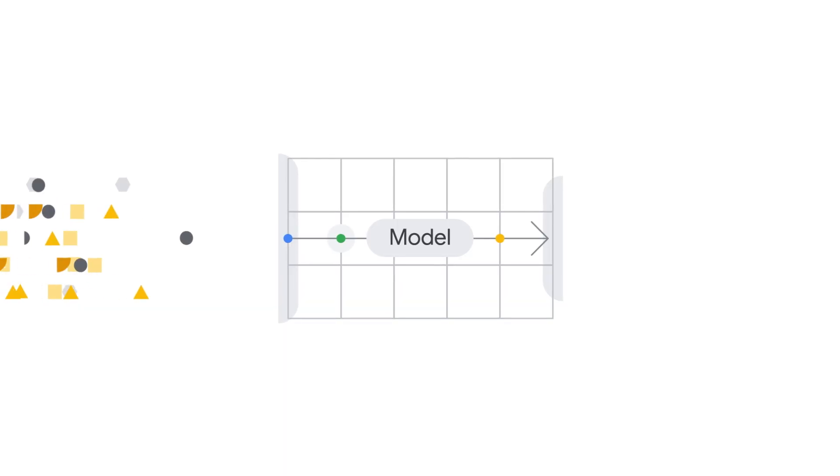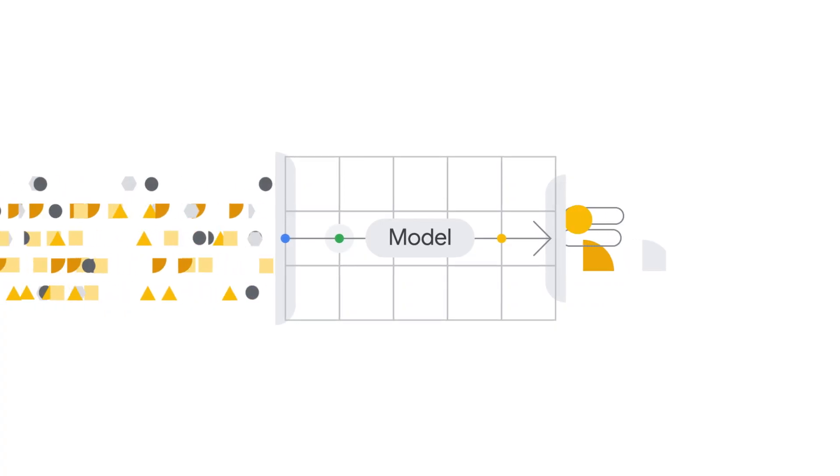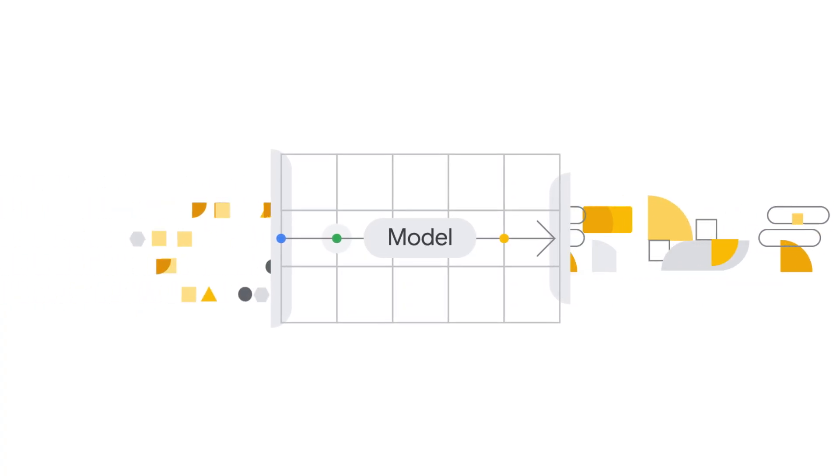We actually touched on this in course one — how ML systems learn from data to tackle specific challenges. But the question is, how do AI systems powered by ML actually accomplish these tasks? The simple answer is math. We call the math the model. When you plug an input into the model, you receive an output, similar to any mathematical equation. And this model is built from the data itself.